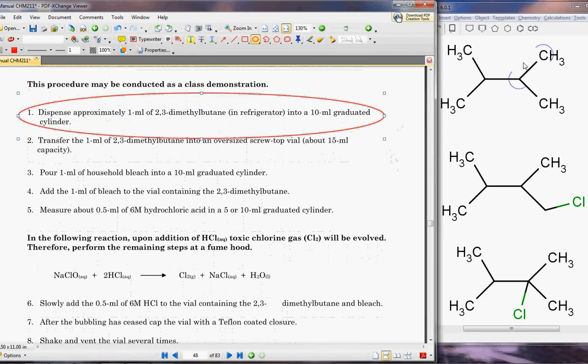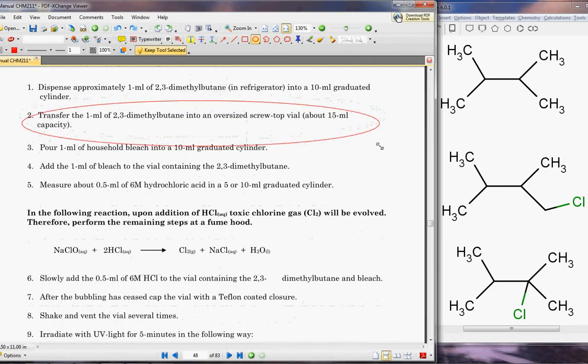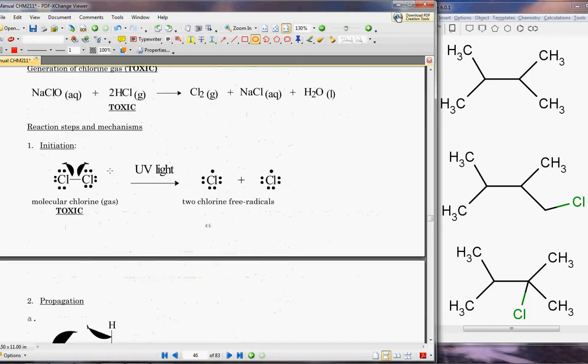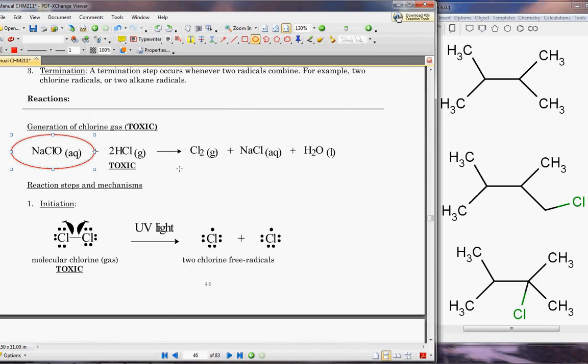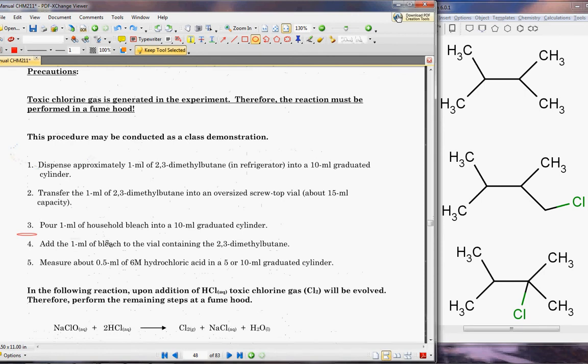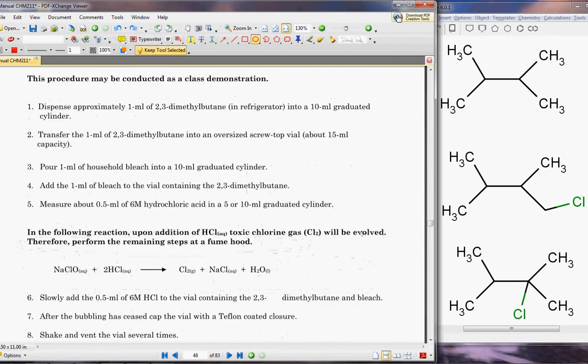Our first procedure is we're going to dispense some of this dimethylbutane, which we have right here in the fridge, into a 10 milliliter cylinder. We're then going to transfer it into a screw top vial where our reactions are going to take place. We're going to add one milliliter of household bleach to the dimethylbutane.